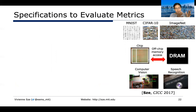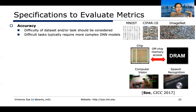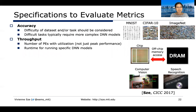We should also dig deeper into how to specify each of these objectives or metrics. When we talk about accuracy, we shouldn't just take one number — it really matters what is the accuracy on the difficulty of the data and the task. Is it 99% on MNIST or 99% on ImageNet or something more challenging? Difficult tasks require more complex DNN models, so for an apples-to-apples comparison, we should consider the difficulty of the task when evaluating accuracy.